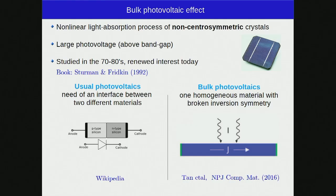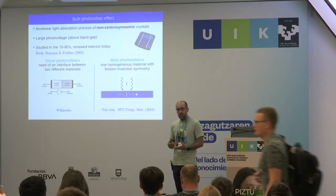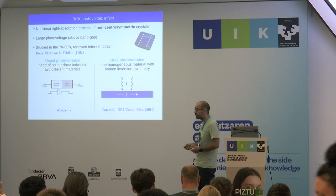The shift current is a particular contribution to the more general bulk photovoltaic effect — a nonlinear light absorption process that takes place in non-centrosymmetric crystals. This is a second-order process, at least in first approximation. Experimentally, it can lead to very large photovoltages, actually above the band gap, making it fundamentally different from the standard linear photovoltaic effect. It was studied heavily during the 70s and 80s, and there is now a renewed interest, partly because of possible applications in solar cells.